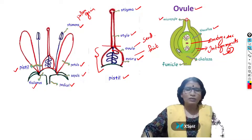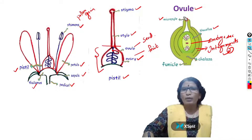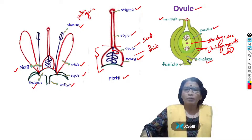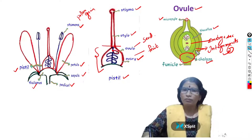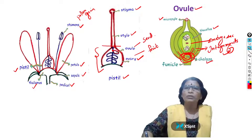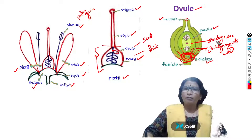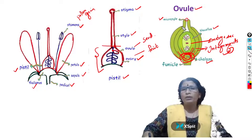In seeds, you can also observe a small pore-like structure because the ovule develops into the seed, so the seed pore is nothing but the micropyle of the ovule. You must focus on the micropyle region and the chalaza region. Chalaza is located exactly opposite to the micropyle, and at that region, three parts are mingled: the integuments, the nucellus, and the funicle. You need to know these two terms — micropyle and chalaza — because they will come up while explaining the embryo sac.